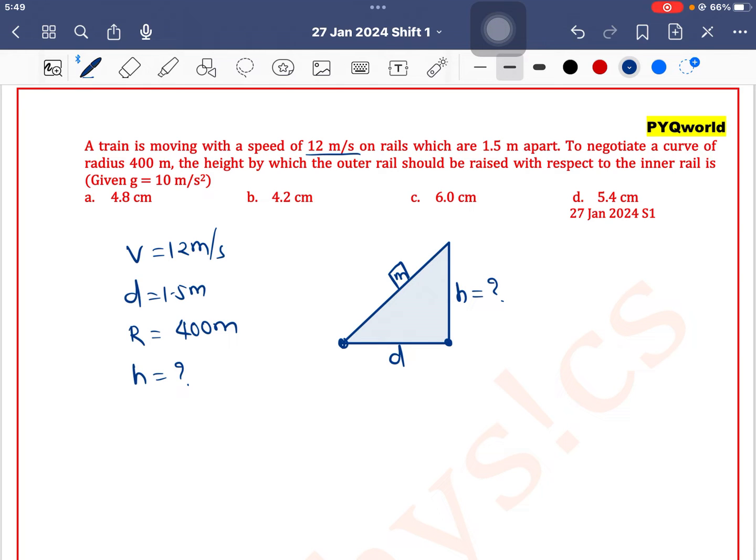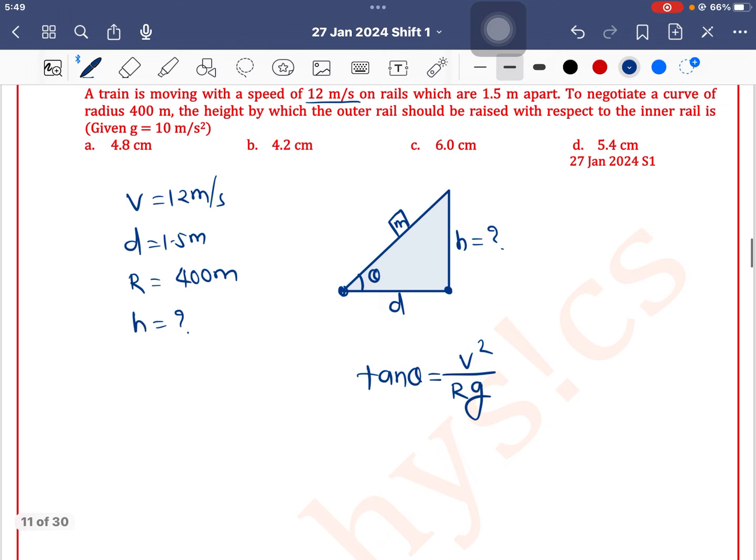From the concept of angle of banking, if this angle is theta, then we know that tan theta equals v squared by Rg. From the triangle in the diagram, we can write tan theta as opposite upon adjacent.